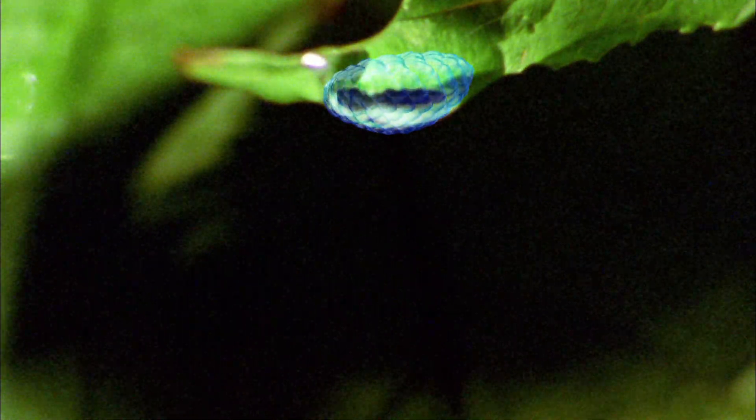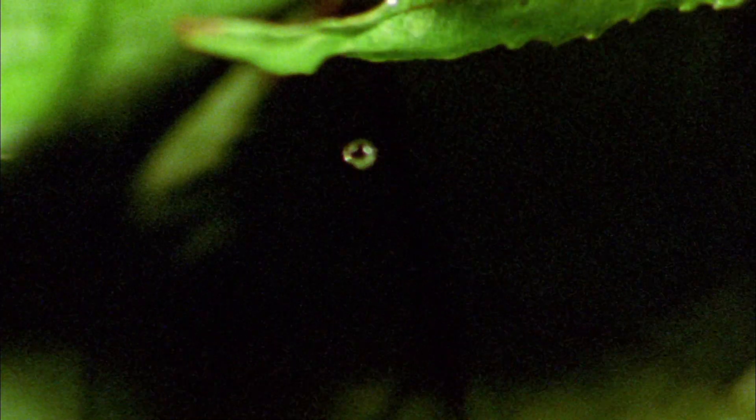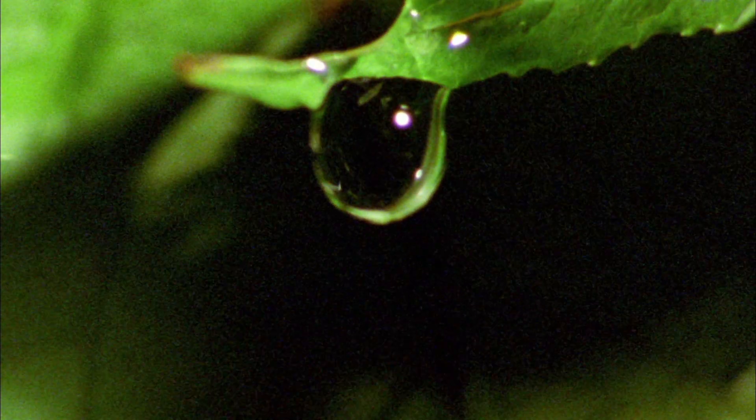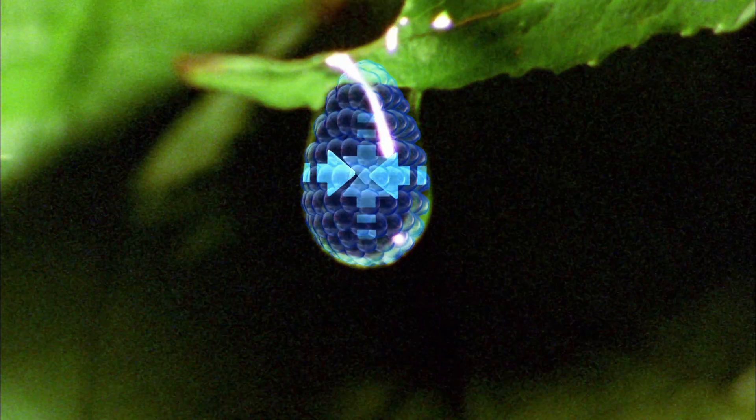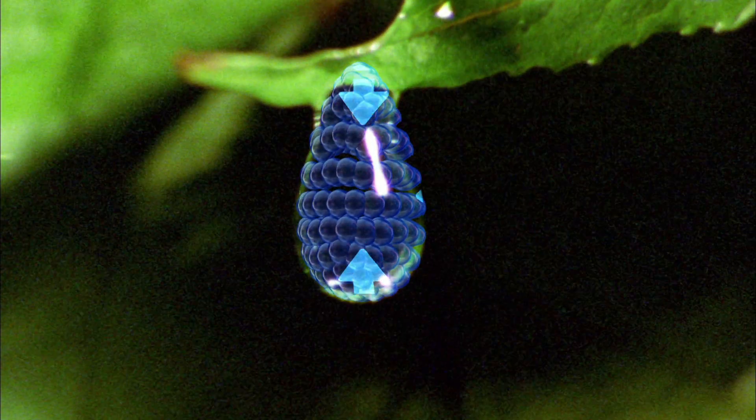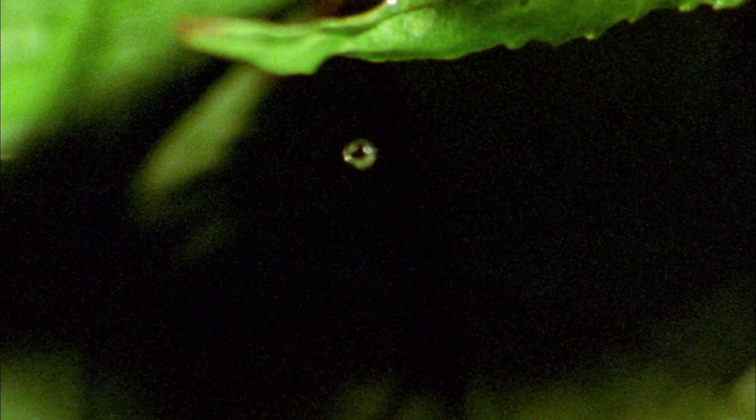But why are drops round? Well, the reason is the water particles. They like each other. Therefore, they attract each other. On the outside of the drop, however, they are only pulled inwards. The result is an almost perfect sphere, but only for fractions of a second when it's in free fall.